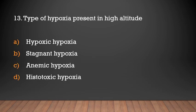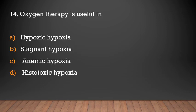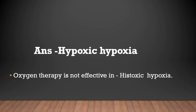Type of hypoxia present at high altitude is: hypoxic hypoxia, stagnant hypoxia, anemic hypoxia, or histotoxic hypoxia? The answer is hypoxic hypoxia. Oxygen therapy is useful in hypoxic hypoxia.